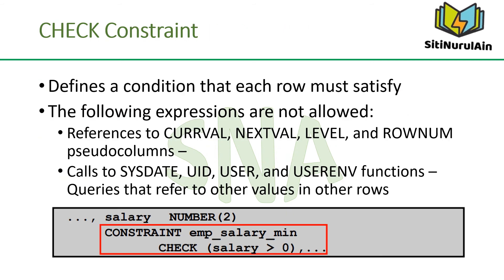The CHECK constraint defines a condition that each row must satisfy. The condition can use the same constructs as query conditions, with the following exceptions: references to the CURRVAL, NEXTVAL, LEVEL, and ROWNUM pseudocolumns; calls to SYSDATE, UID, USER, and USERENV functions; and queries that refer to other values in other rows. A single column can have multiple CHECK constraints that refer to that column, and there is no limit to the number of CHECK constraints you can define on a column.